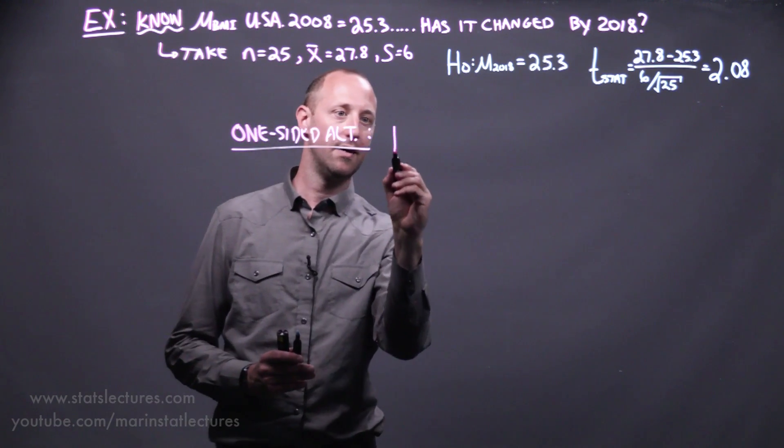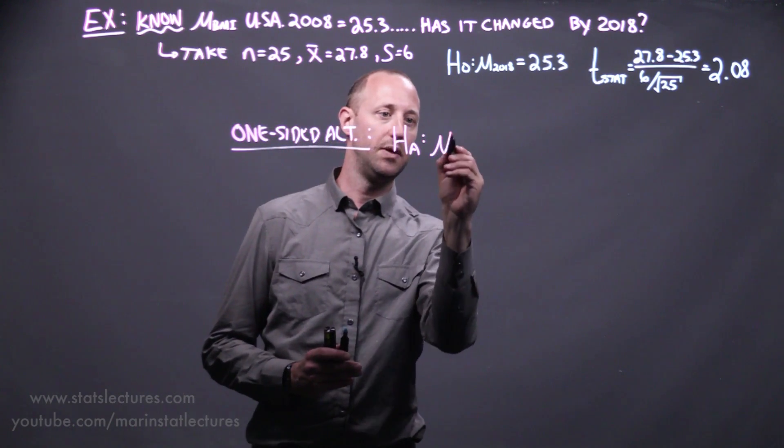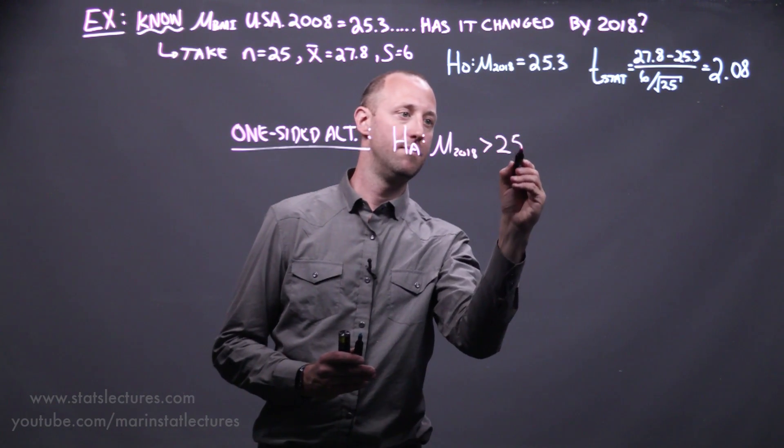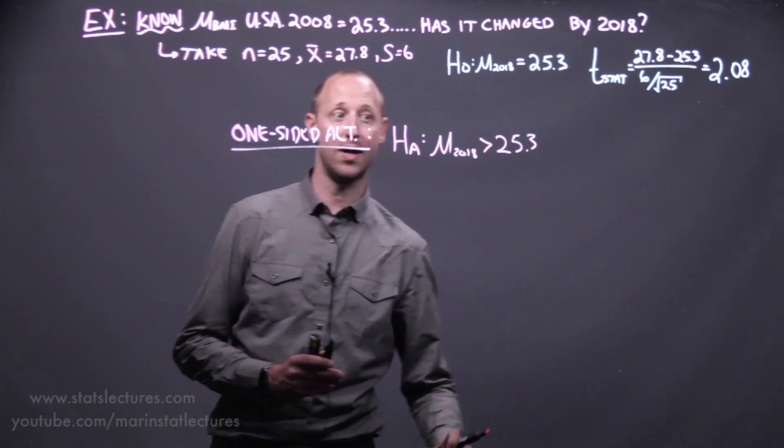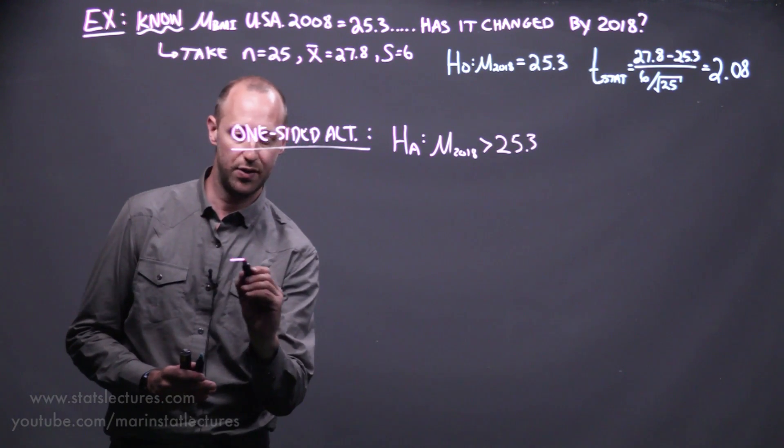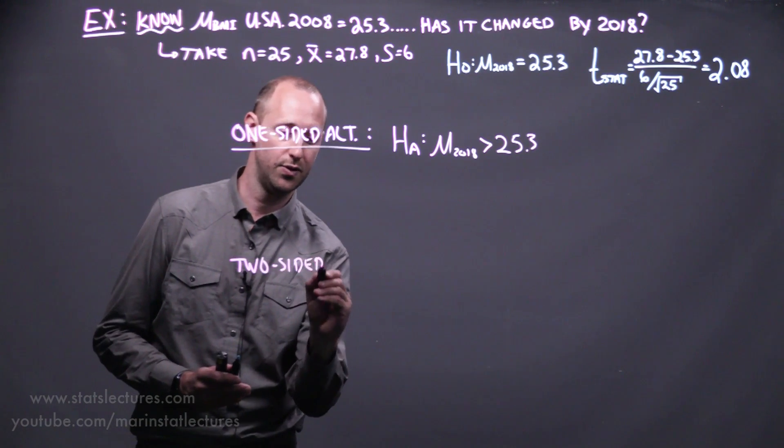Here we're looking at an alternative hypothesis that the mean in 2018 is now greater than the mean of 2008, versus the idea of a two-sided test, a two-sided alternative.